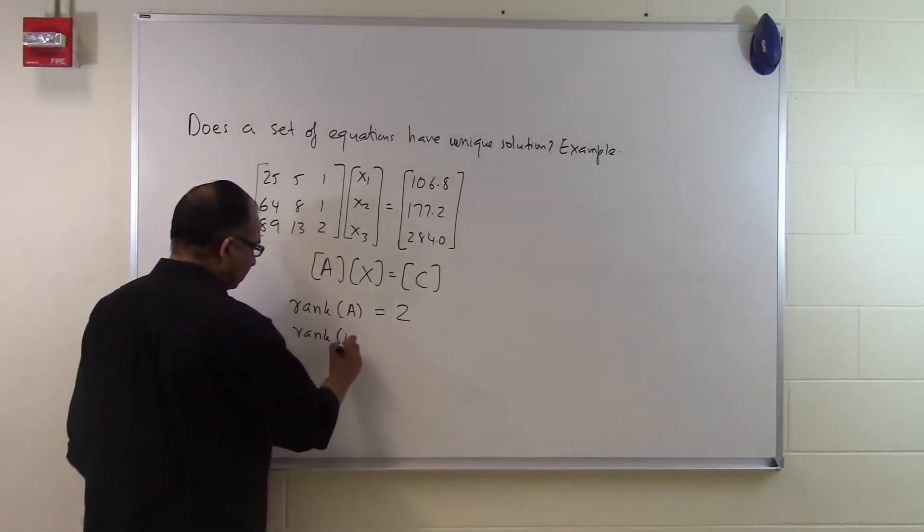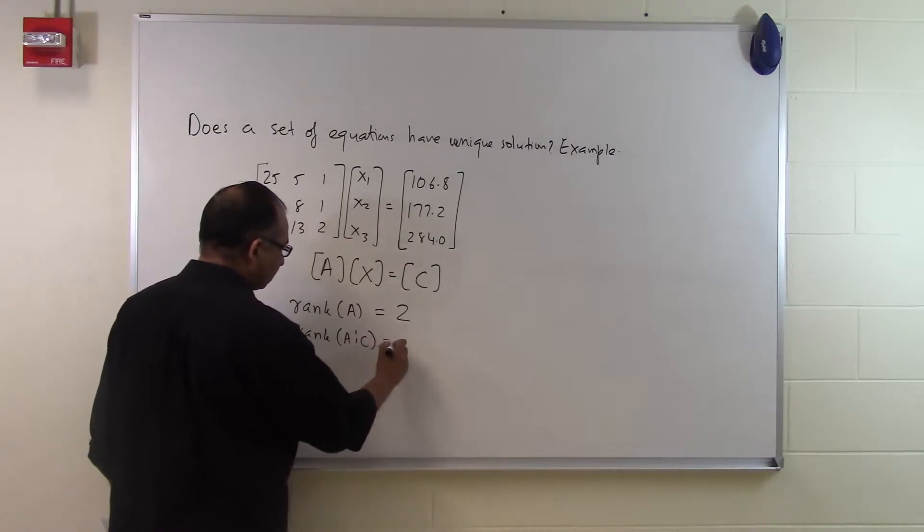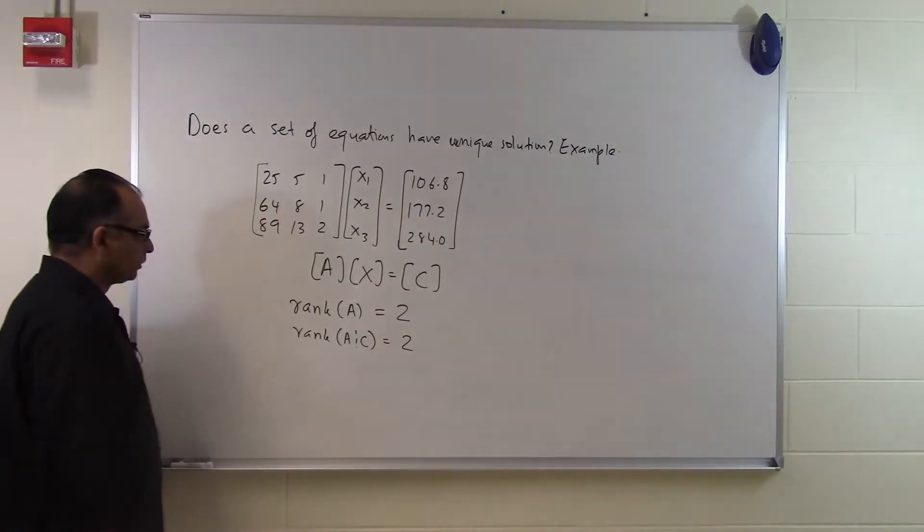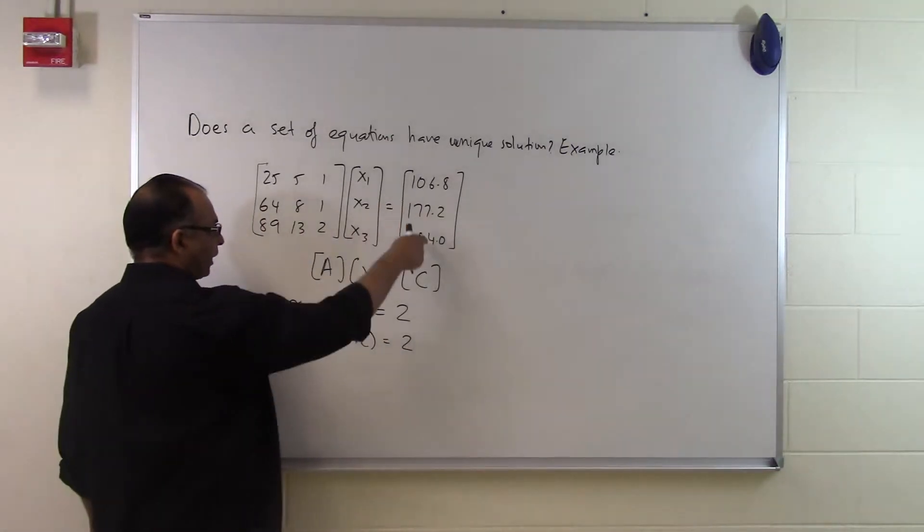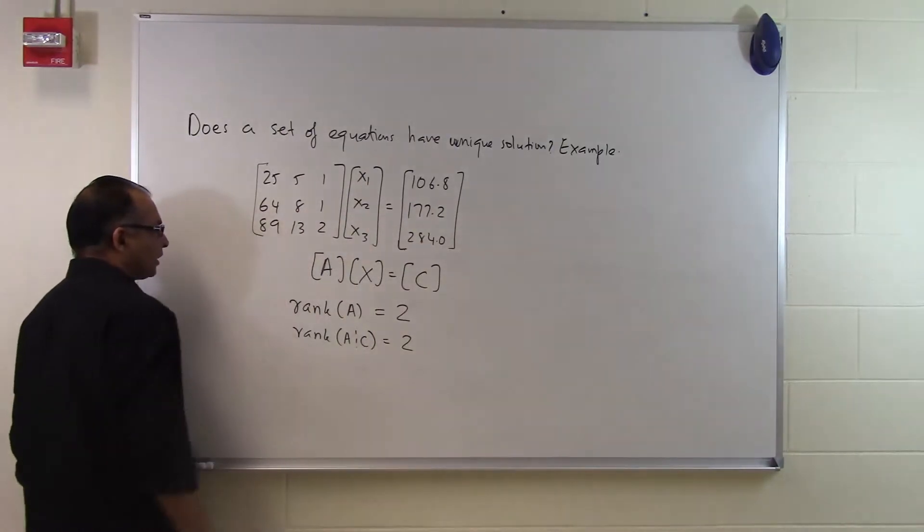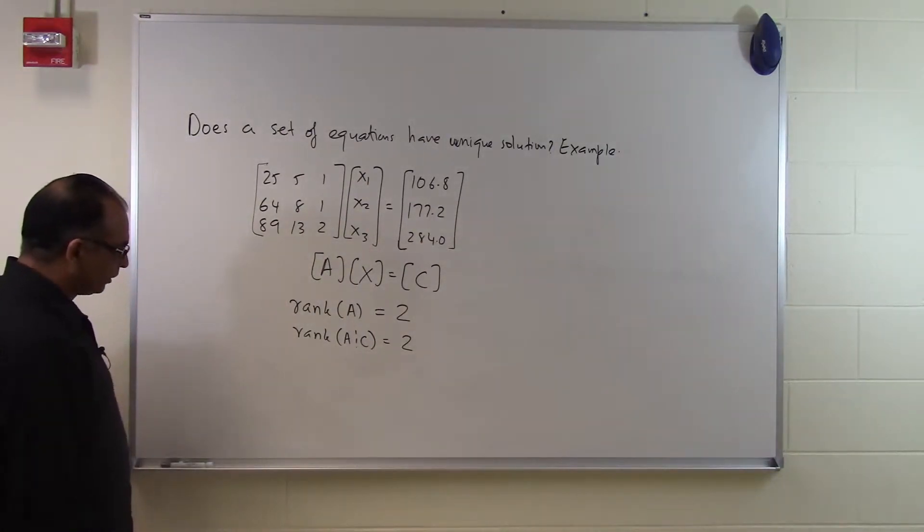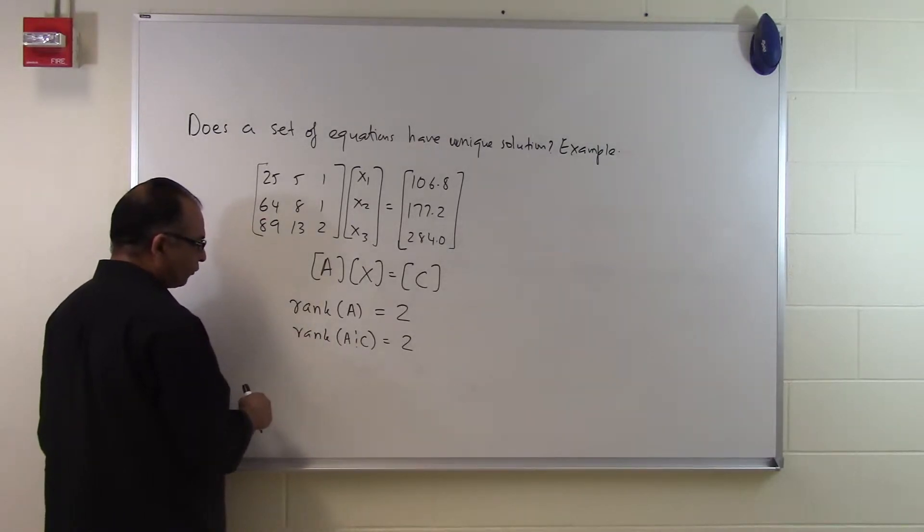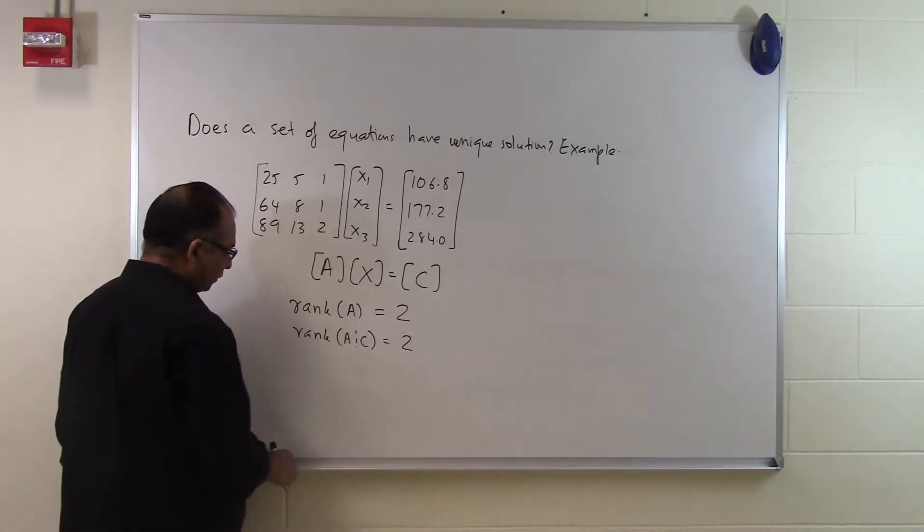Rank of the augmented matrix also turns out to be 2. So the augmented matrix will be simply taking the right-hand side vector, adding it as the fourth column to the A matrix and then finding the rank of that 3 rows and 4 column matrix and it turns out to be 2.